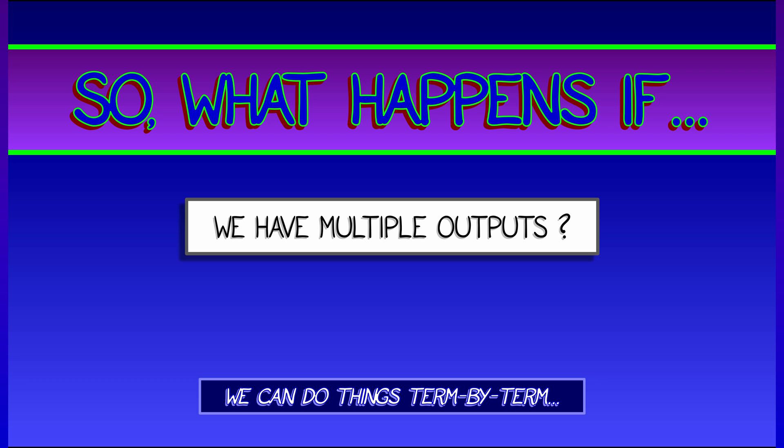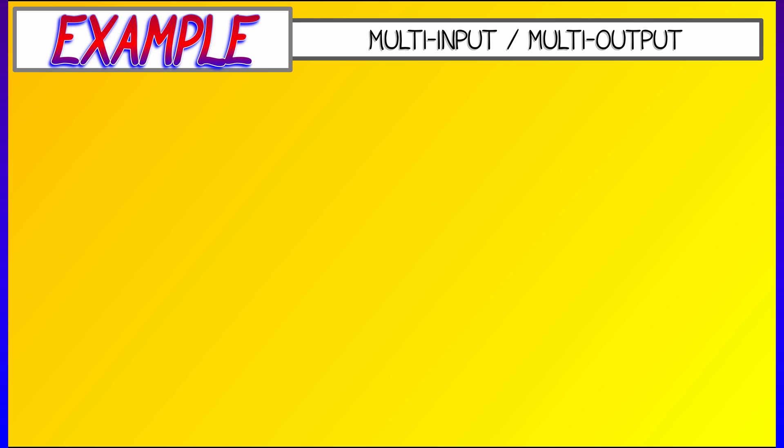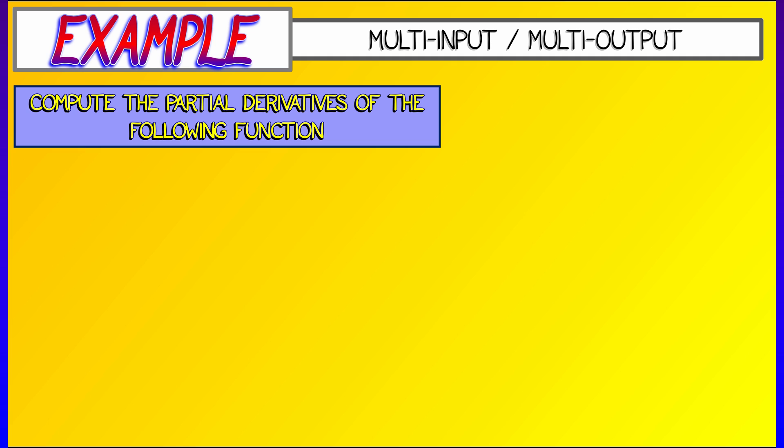Let's show how that works in the context of a simple example. Let's look at a function that has multiple inputs, multiple outputs, and compute all the partial derivatives. Let's say f has two inputs, x and y, and three outputs, u, v, and w.